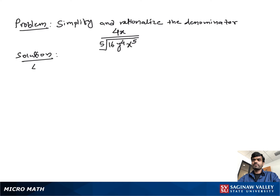Simplify and rationalize the denominator: 4x over the 5th root of 16y^4x^5. We can write this as 4x over the 5th root of (2×2×2×2) times (y×y×y×y) times x^5.